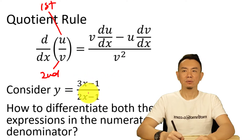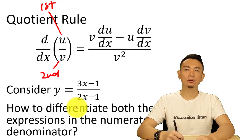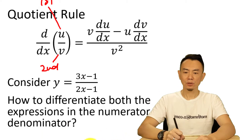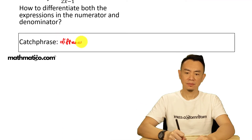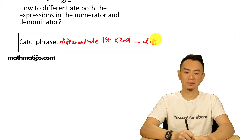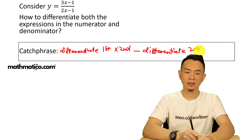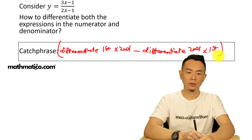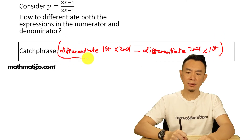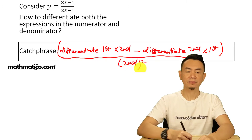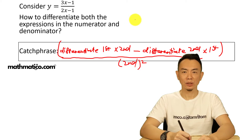So if you have (3x minus 1) divided by (2x minus 1), we have this equation. How do you differentiate expressions in both the numerator and denominator? We use this catchphrase: differentiate the first times the second, minus differentiate the second times the first. And this whole thing we divide by the square of the second.